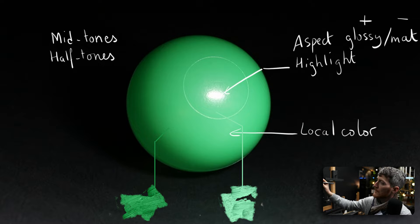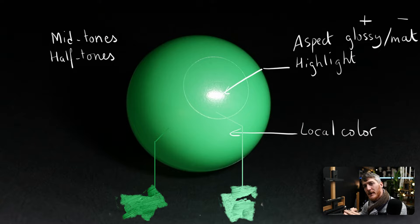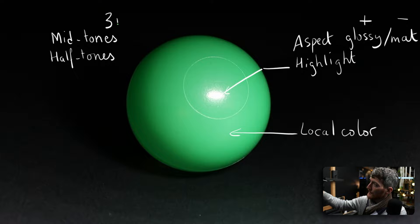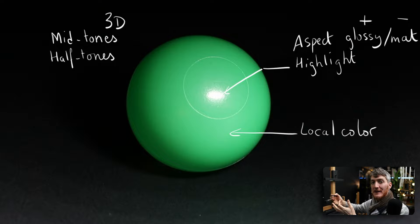Next we have the midtones, sometimes called halftones. In this category you have the dark midtones — those that go more towards the shadows — and you have the light midtones, those that go more towards the highlight. The success of the three-dimensionality of your painting is going to be all about how the midtones articulate and blend into each other. As long as your local color is on point, getting the midtones right is pretty simple — you just make them darker or lighter from there.